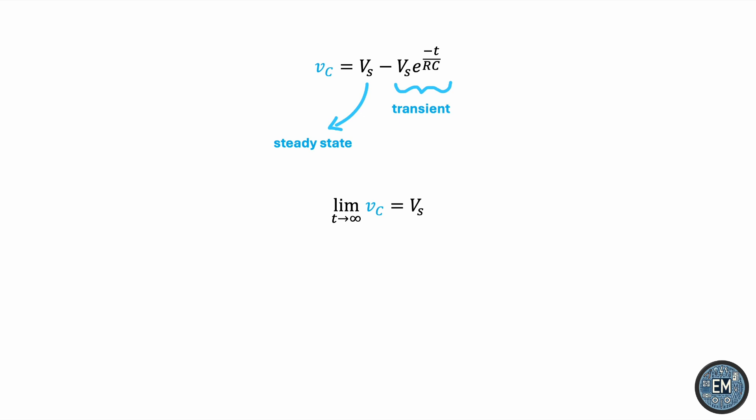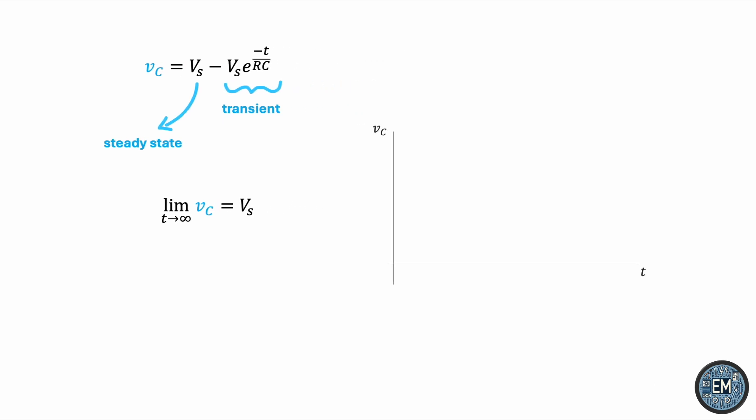If we were to look at a graph of VC with respect to time, we would expect to see something like this: a rise from zero that slows down and tends towards the voltage source VS. Of course, the exact shape of the graph will depend on the parameters R, C, and VS, but the general form will look something like this.